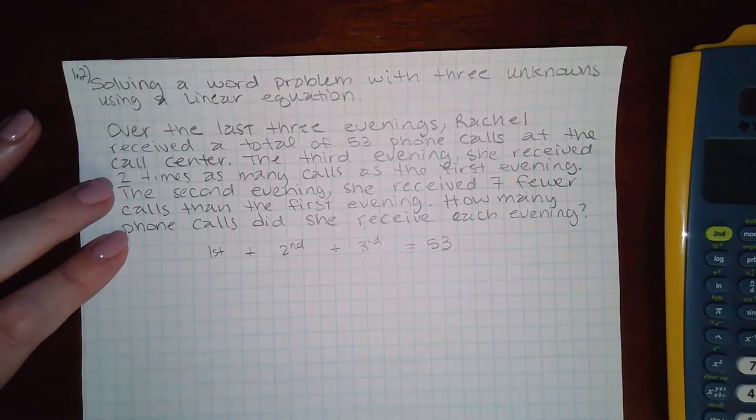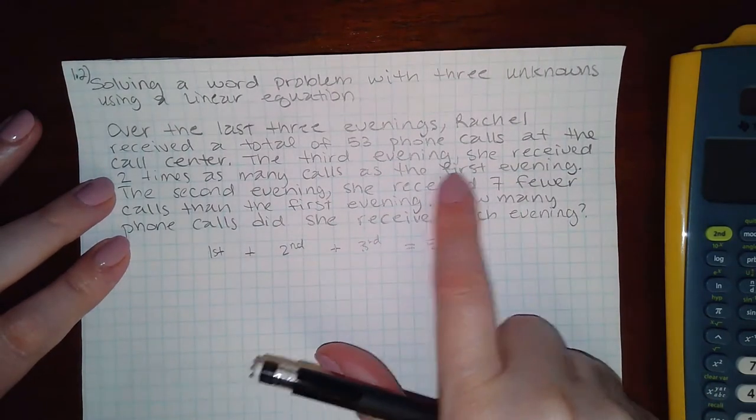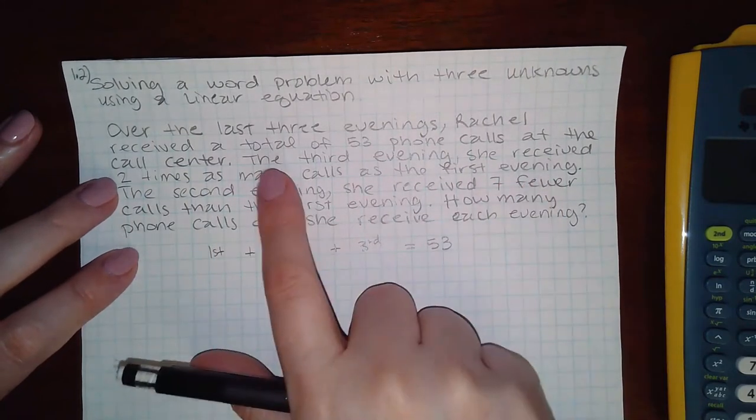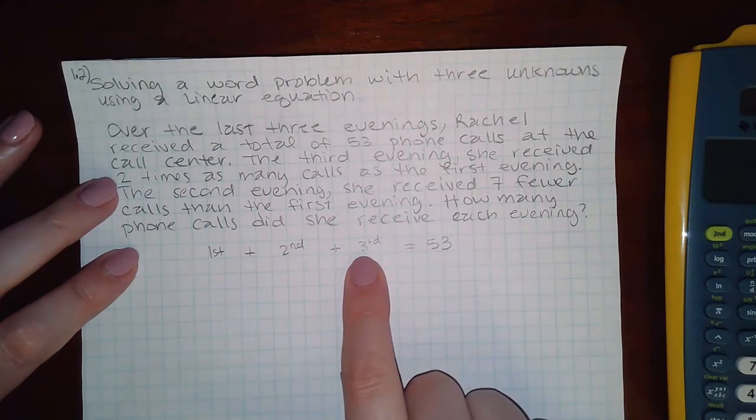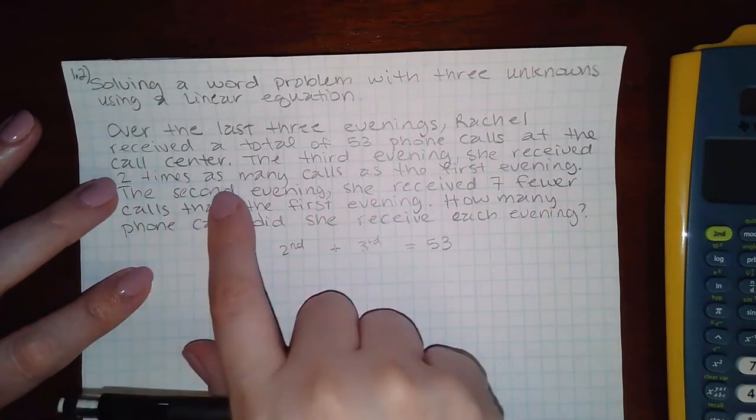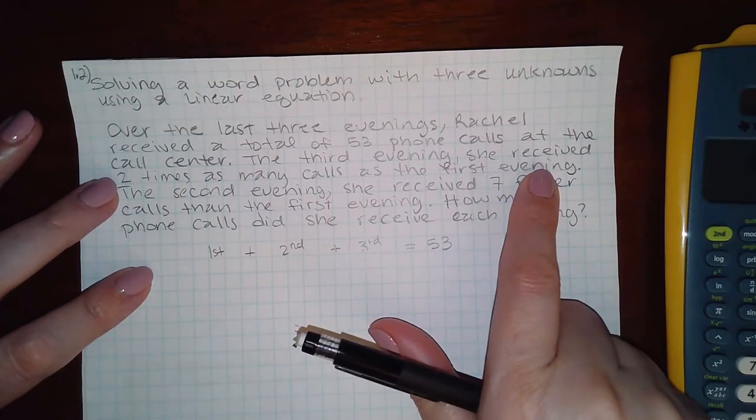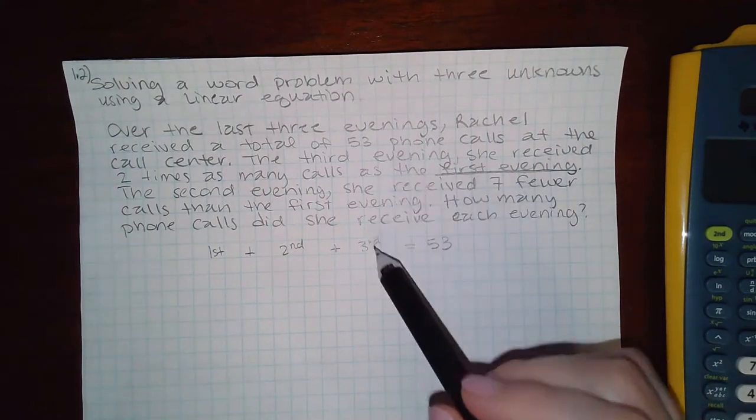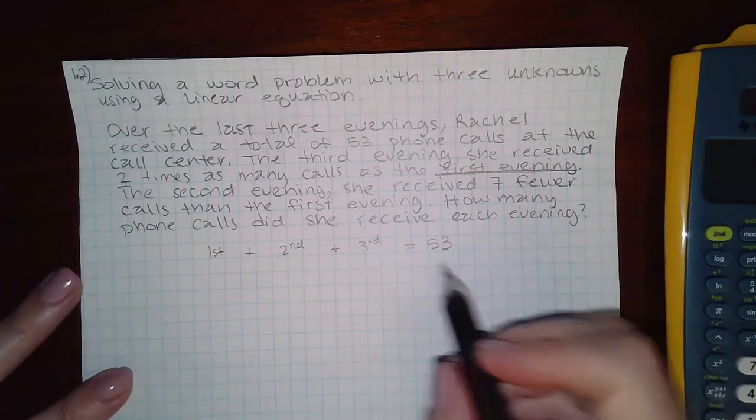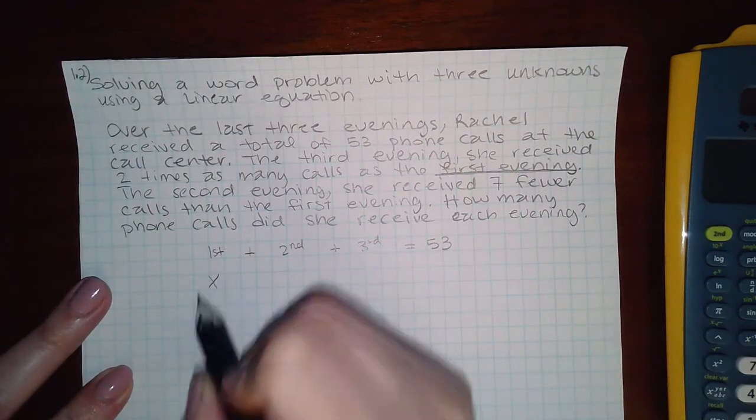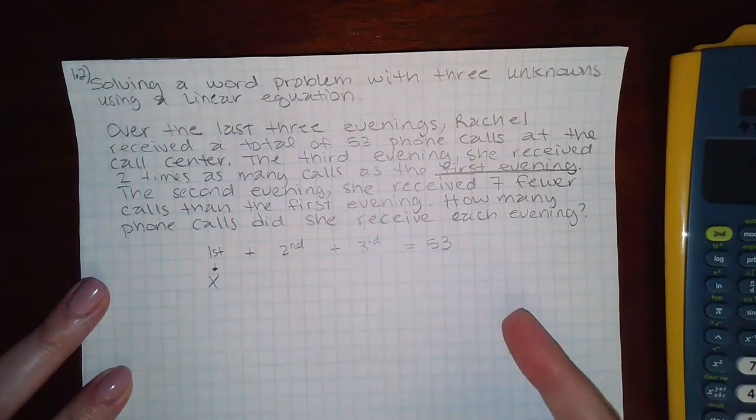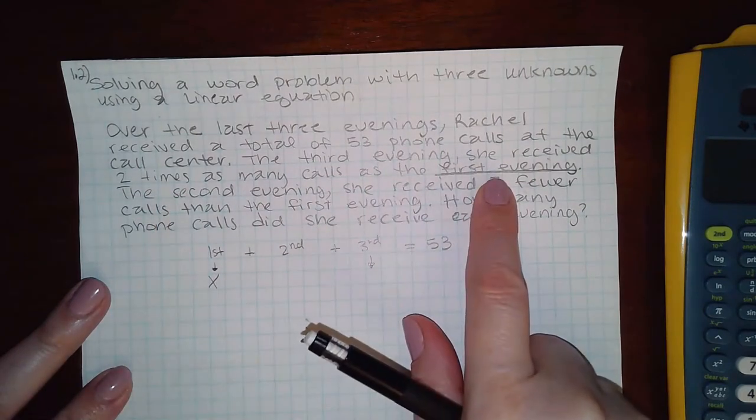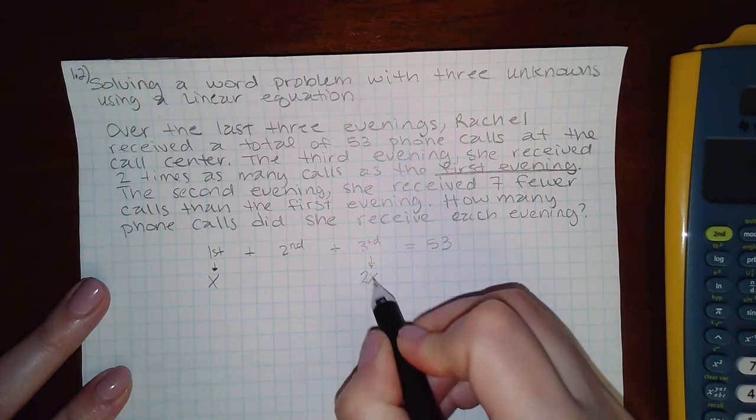Now they talk about the third evening—she received two times as many calls as the first evening. So they're talking about this one, the third evening. That means the first evening is being used to describe the other evenings. For me, that means that the first evening is going to be x because that's the one being used to describe the others. Then now when I use that description, two times as many as the first evening, this expression would be two times x.